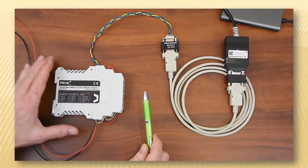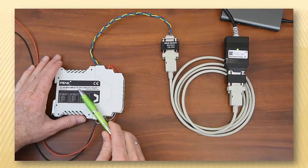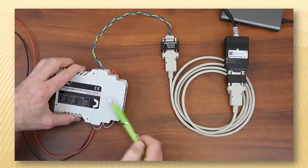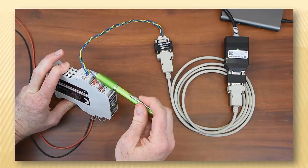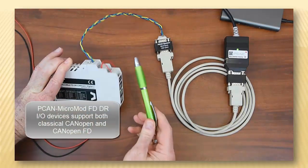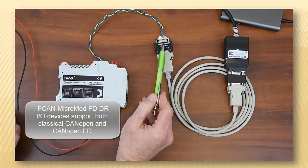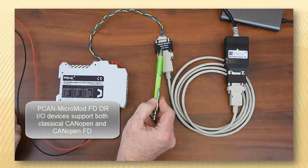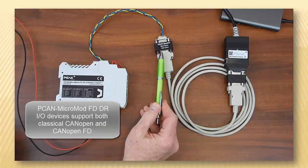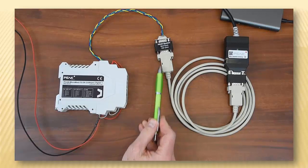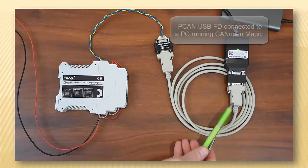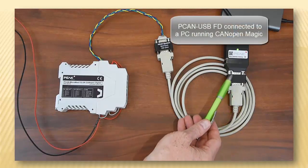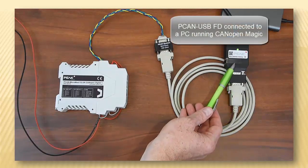This is our hardware setup. We have a PEAK Micromod FDDR module — a digital input/output module connected via the two CAN low and CAN high signals going through a termination resistor, then a regular DB9 extension cable, another termination resistor going into a PEAK PCAN USB interface.